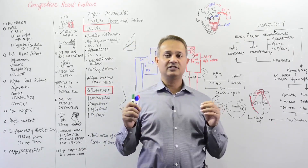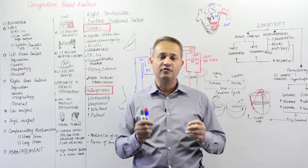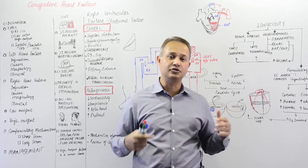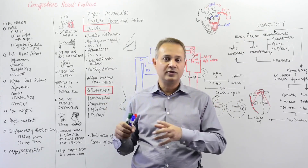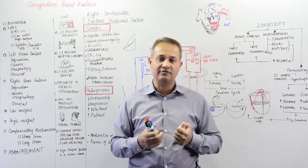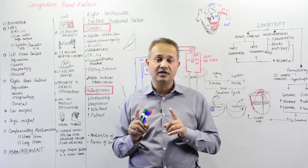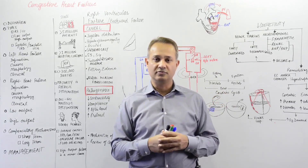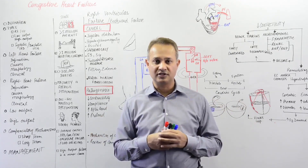Now for the definition of cardiac failure: it is the failure of the heart to fulfill the needs of the tissue, or the failure of the heart to eject enough blood to meet the nutritional needs of the tissue. This failure can be of two types: one where the heart is damaged and cannot pump enough — that is systolic dysfunction — or it is dilated, which is diastolic dysfunction.